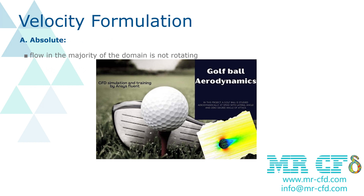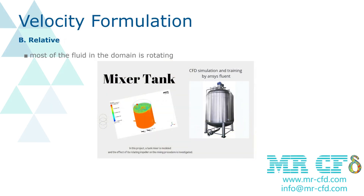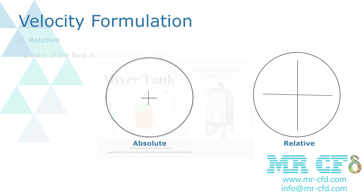After the solver type, it is time to investigate velocity formulation. In cases where the flow in the majority of the domain is not rotating, the absolute velocity formulation is chosen — for example, when studying the aerodynamic characteristics of a moving golf ball. On the other hand, when most of the fluid in the domain is rotating, as in the case of a large impeller in a mixing tank, the relative velocity formulation is applicable. For a small impeller in a vast computing domain, only the flow near the impeller is expected to rotate, so solving in the absolute formulation is advised.